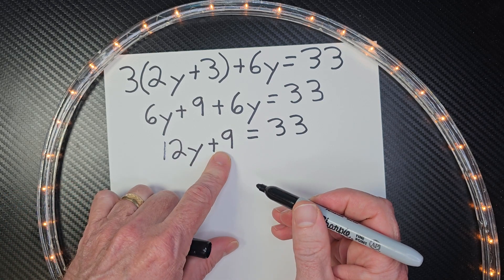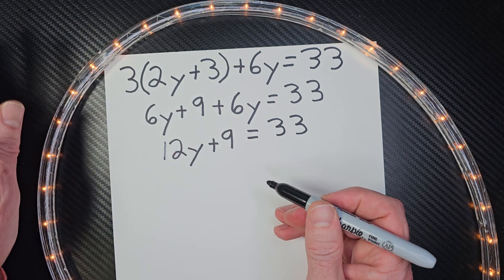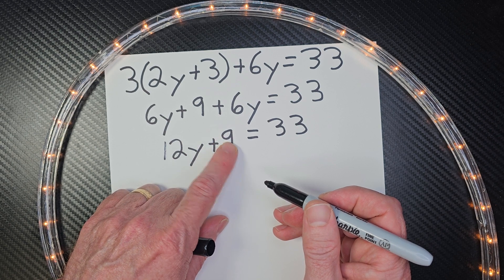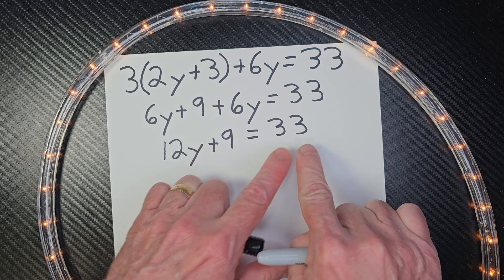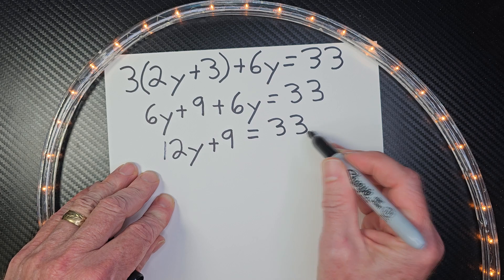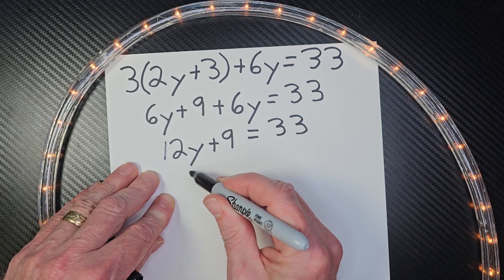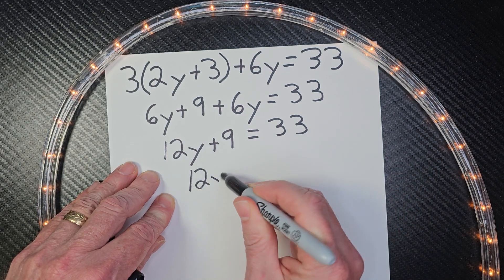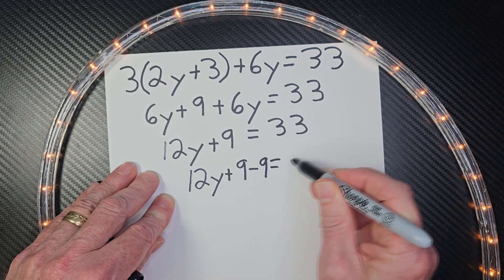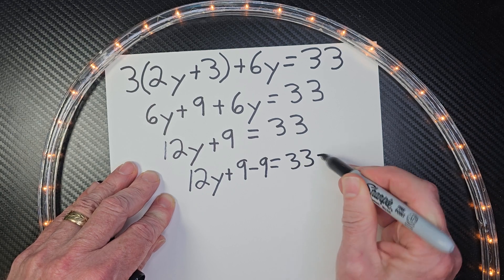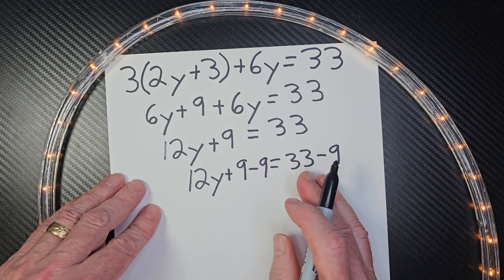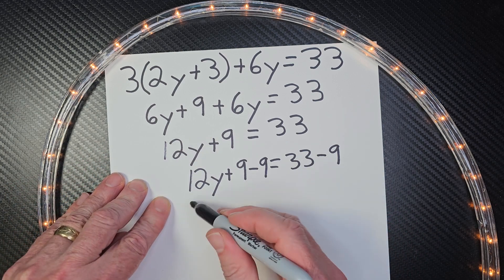So now I need to get rid of 9, just wipe it out of there. And the only way to make that 0 would be to take 9 minus 9, which would be 0. But whatever I do here, I need to do the exact same thing on that side. So I'm going to subtract 33 minus 9 on that side. So I'll show you what it looks like. I'm going to have 12Y plus 9 minus 9 equals 33 minus 9. That's a lot, but don't get worried. We're taking it easy cheesy lemon squeezy.